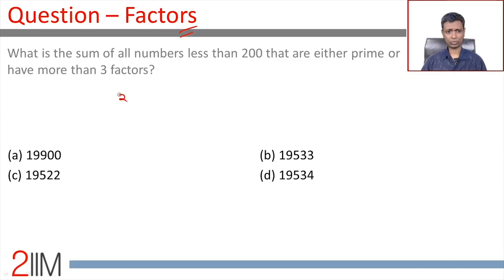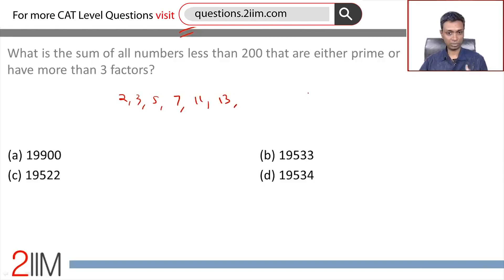We should add numbers like 2, 3, 5, 7, 11, 13. All these are prime numbers. Numbers that have more than three factors.